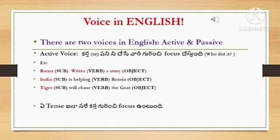So first of all, what is active voice? It means who did it. In active voice the focus is on the subject — the one who performed the action. Here we see the example: Rama writes a story. The syntax of active voice is subject plus verb plus object. Here Rama is subject, writes is verb, and a story is object.